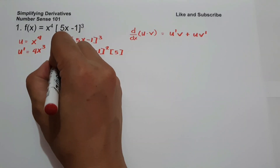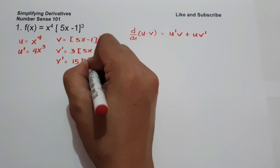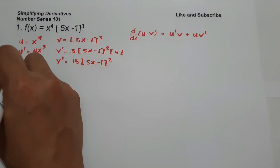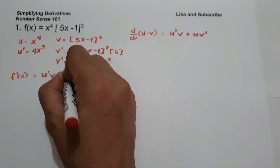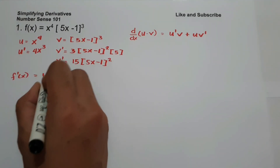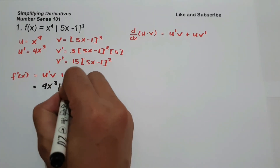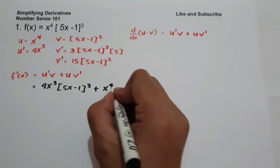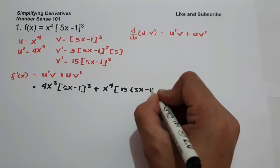The derivative of 5x minus 1 is 5. So let us simplify. v' will be 3 times 5, that is 15, times 5x minus 1 squared. So let us have f'(x) equals u' times v plus u times v'. So u' is 4x³ times 5x minus 1 raised to 3, plus u, which is x raised to 4, times v', that is 15 times 5x minus 1 squared.